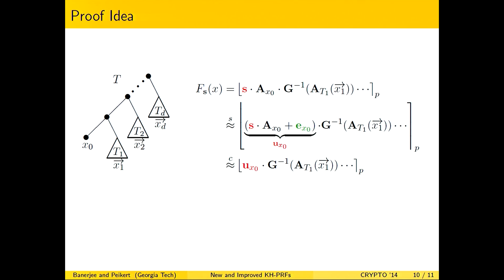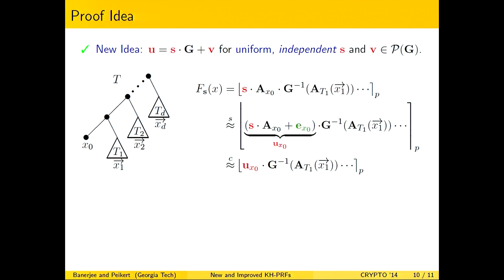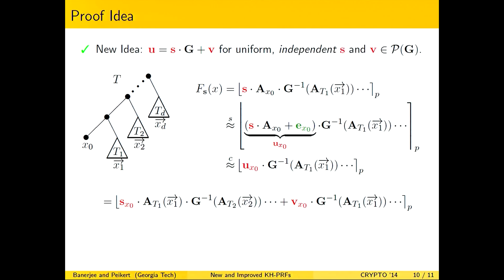This is where we run into trouble when we want to iterate the proof. The multiplicand of the uniform term is now G-inverse of A_{T_1}, and in general T_1 may have more than one leaf — we can't embed an LWE challenge here because it is highly structured and dependent on the bits of x_1. The key new idea is: we replace u with s·G plus an independent uniform residue v modulo G. The key point is that v is independent of s·G.